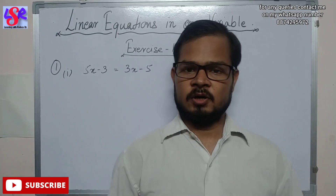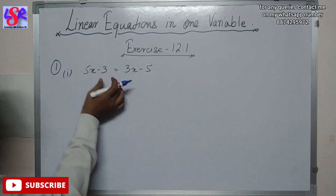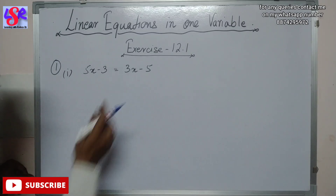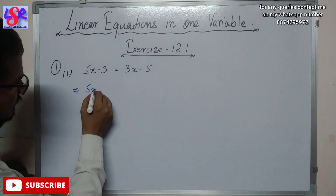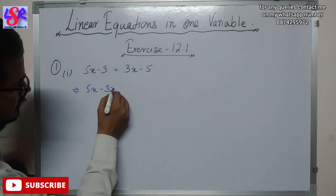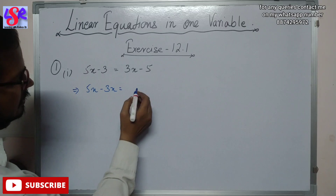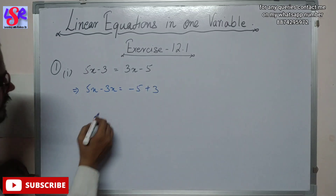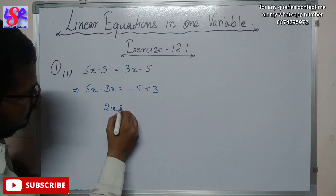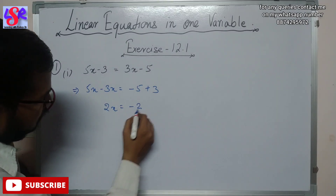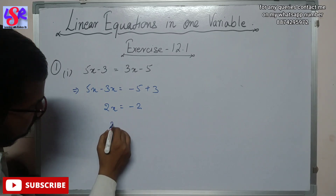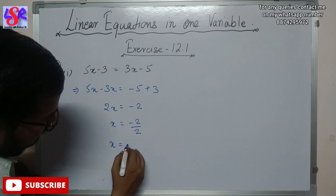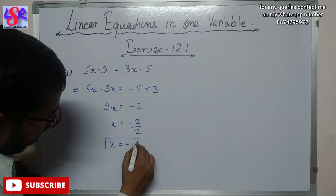Now let's start with question number 1, first part. Here we are having 5x minus 3 equals to 3x minus 5. We are going to transpose: 5x minus 3x equals to minus 5 plus 3. So 2x equals to minus 2. Dividing, x equals to minus 2 upon 2, giving x equals to minus 1 as answer.